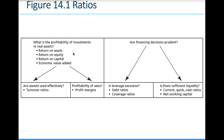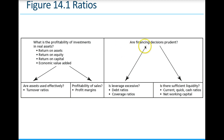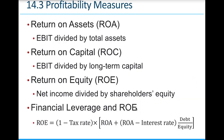For profitability measures, return on assets is EBIT divided by total assets — measuring what percentage return the assets are delivering. The more income the assets generate, the better. For example, running a factory 24 hours instead of 8 hours a day makes it a more effective asset, generating higher EBIT. Return on capital is EBIT divided by long-term capital — a variant of return on assets focused on long-term capital. Financing decisions address how much leverage the company is taking and whether they have enough liquidity to cover it.